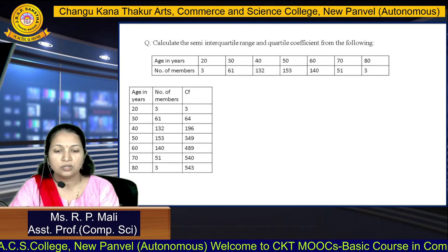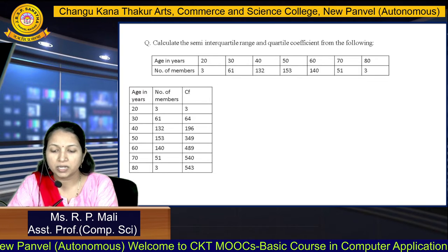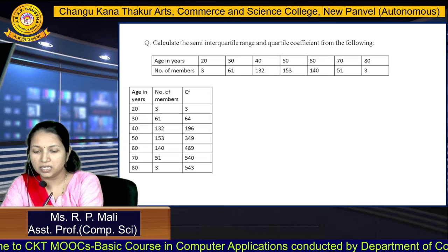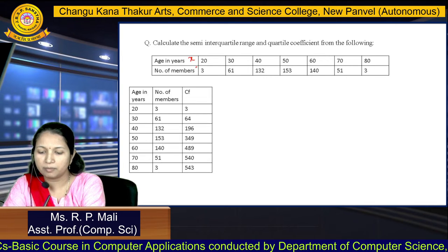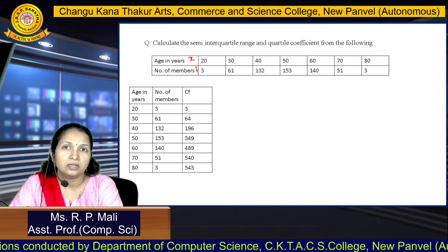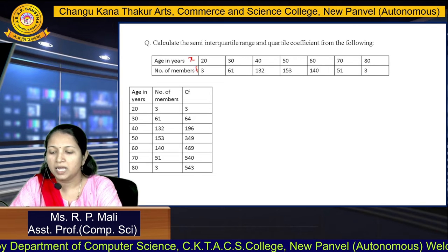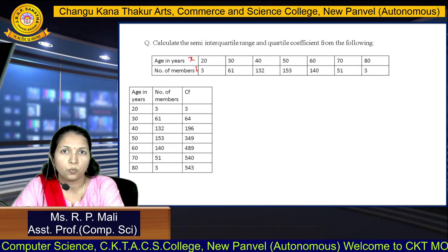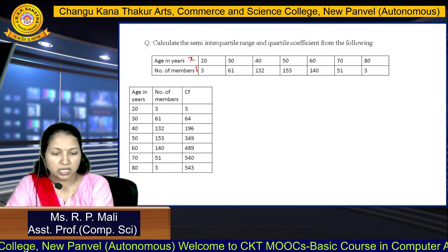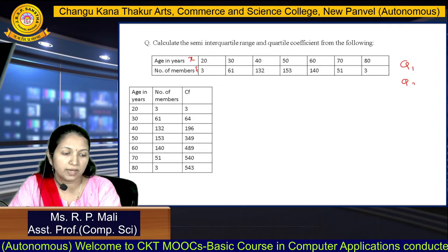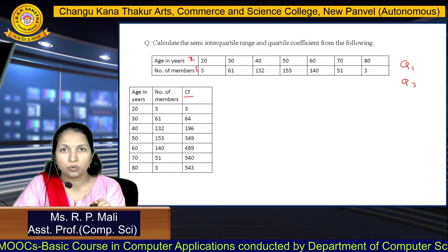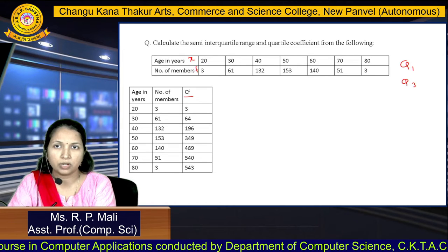We are going to solve an example: calculate the semi-interquartile range and quartile coefficient from the following data. The table has age in years as X and number of members as F. This is discrete data, with ages 20, 30, 40, 50, 60, 70, 80 and corresponding frequencies. To find Q1 and Q3, we first need to find the cumulative frequency. We arrange the data in a tabular format and find the less-than cumulative frequency.